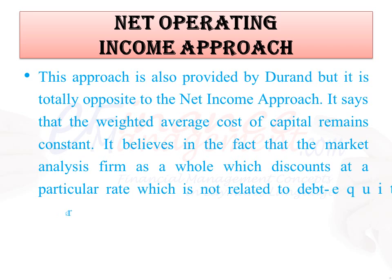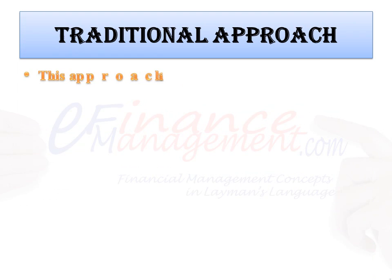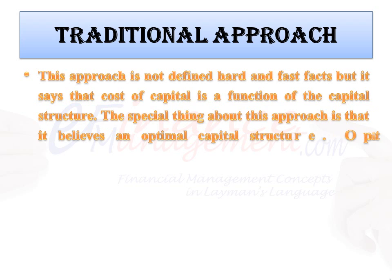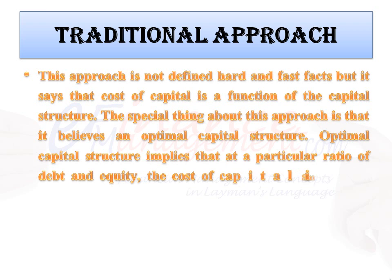Traditional approach: This approach is not defined by hard and fast facts, but it says that the cost of capital is a function of the capital structure. The special thing about this approach is that it believes in optimal capital structure. Optimal capital structure implies that at a particular ratio of debt and equity, the cost of capital is minimum and the value of the firm is maximum.